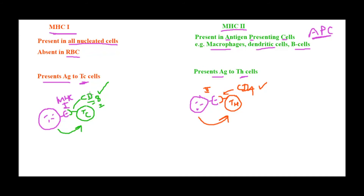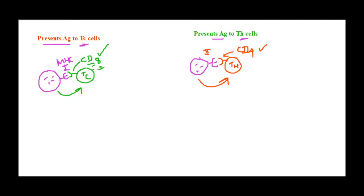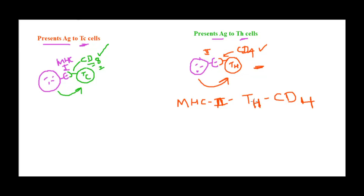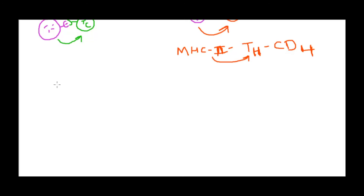When we say MHC is binding with CD4 or CD8, it means MHC plus the antigenic peptide. A helpful trick to remember: look at MHC class 2 — the number 2 has two lines. T helper cell — the letter H has two lines. And CD4 — the number 4 has two lines. So MHC class 2 binds to CD4, which is present on T helper cells. The remaining combination is MHC class 1 binds to CD8, which is present on TC cells.